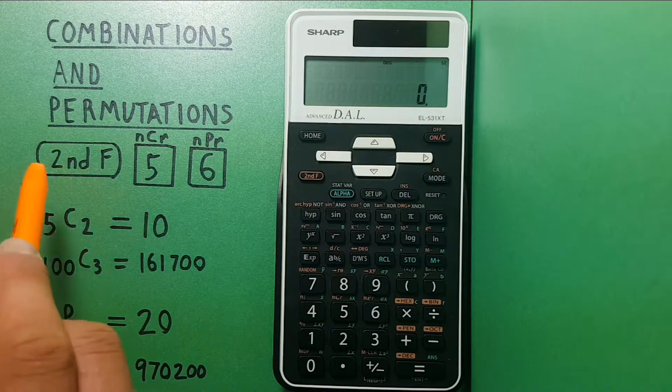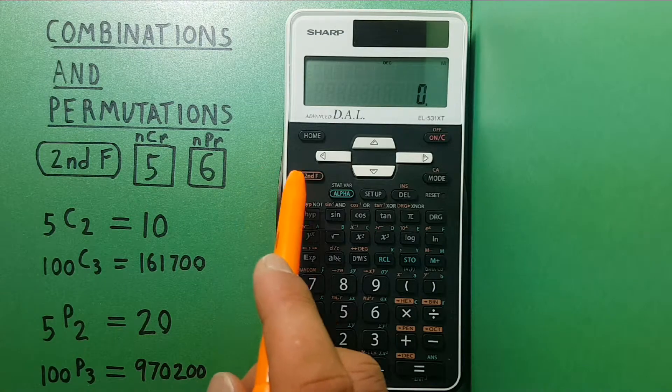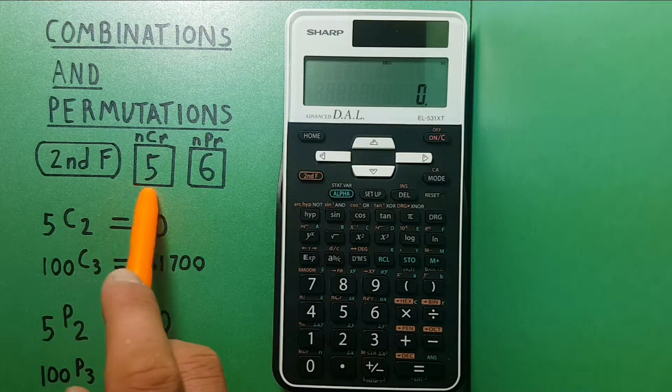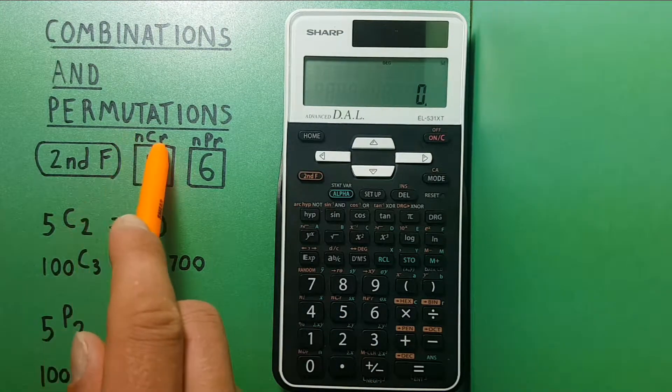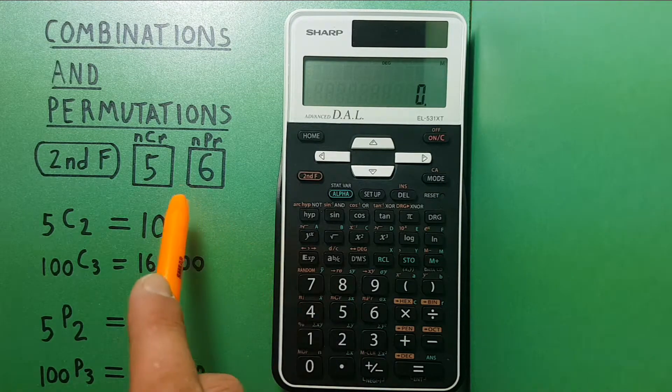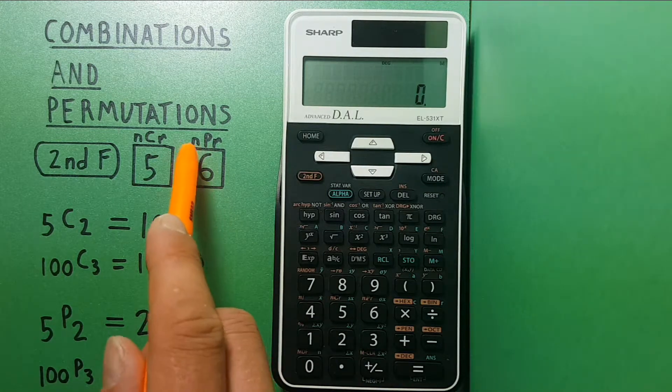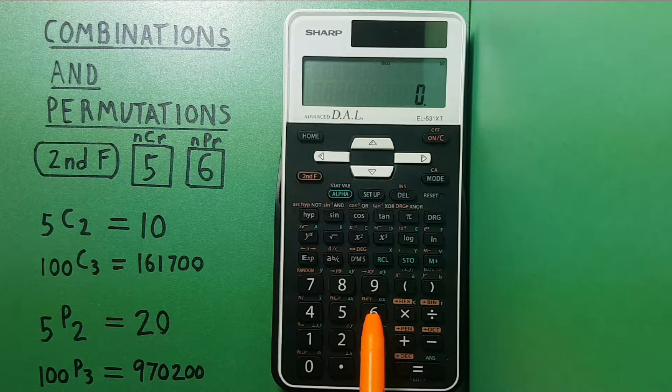To do this we'll be using the second function key located here, the 5 with the second function combination key located here, and the 6 with the second function permutation key located here.